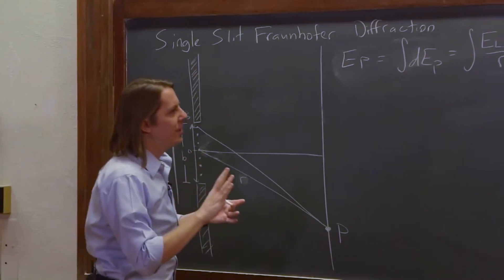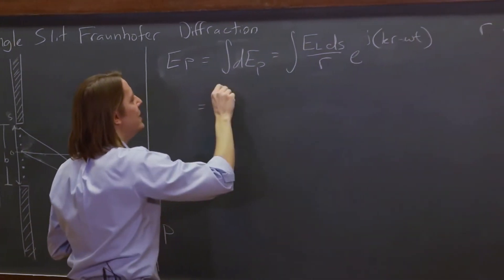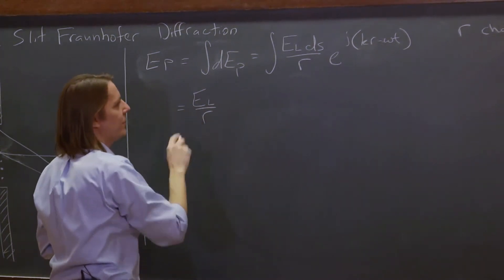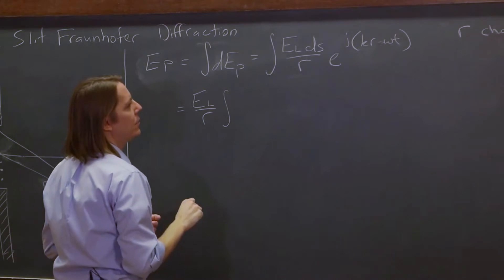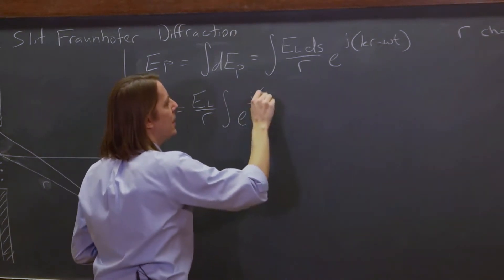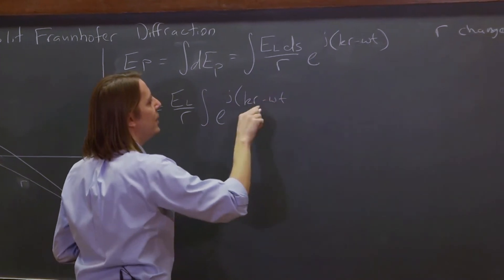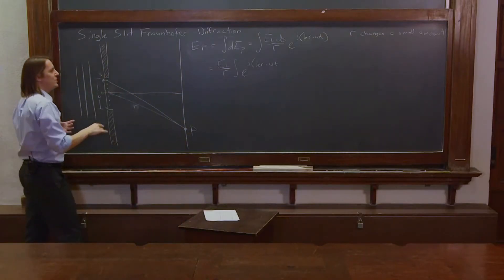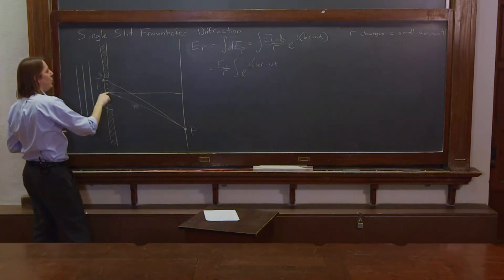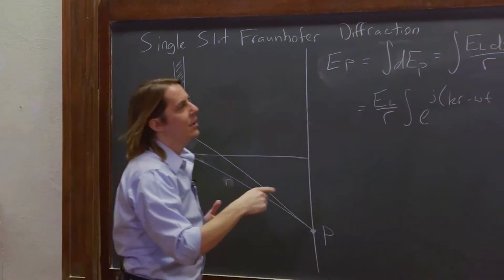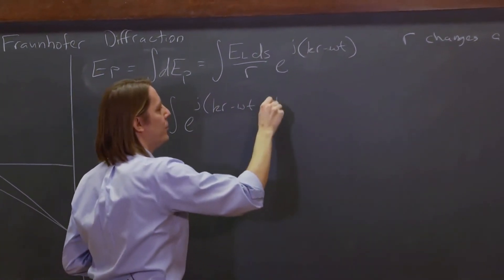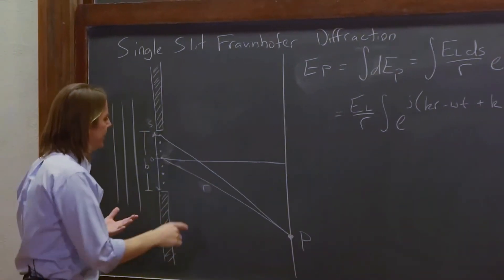To deal with that, we're going to pull the E_L over R out of the integral — that's the constant R where the change doesn't matter much — times the integral of E to the j(kR − ωt). Now we deal with the R that's changing. We leave that R as the center one and figure out the difference for all the others, so it's really just R plus the difference. We add that as another term: k times something else.